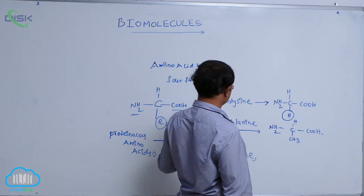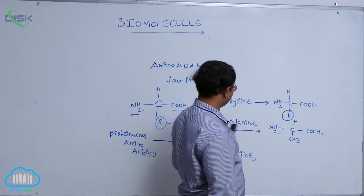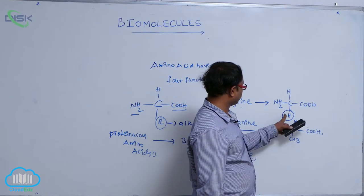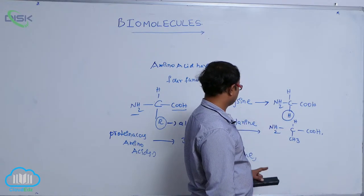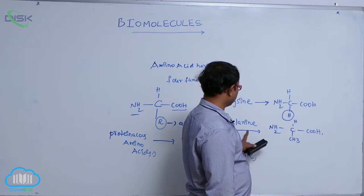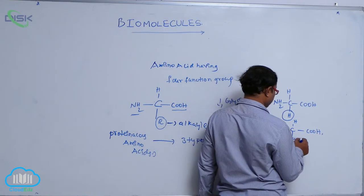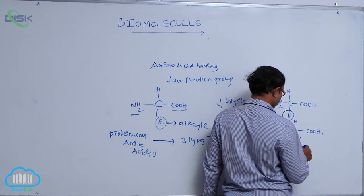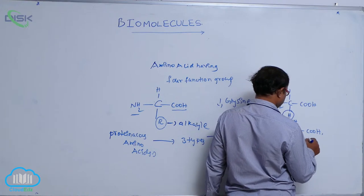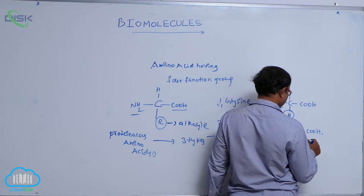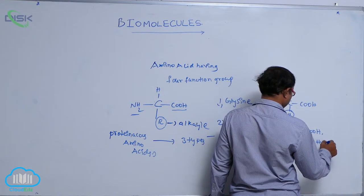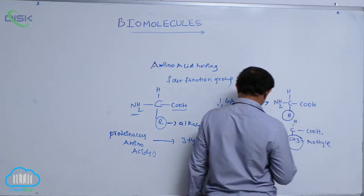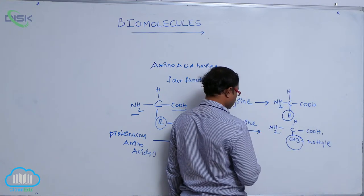At that R-alkyl group, if a hydrogen group is present, that is known as glycine. At the alanine, at the fourth carbon position, a CH₃ group — that is known as the methyl group. So if that methyl group is present, that is known as alanine.